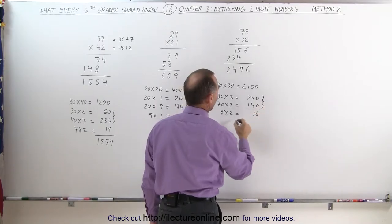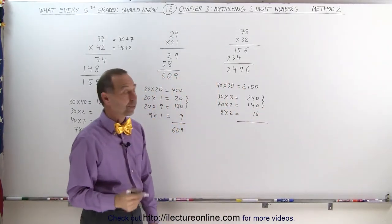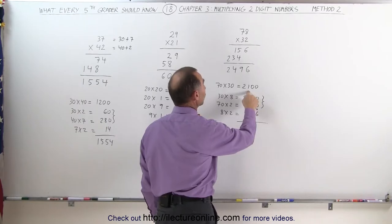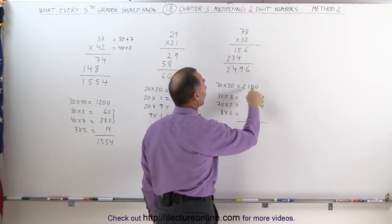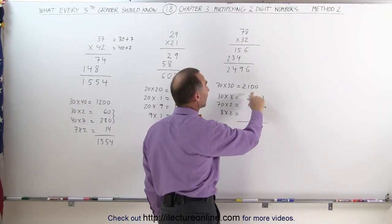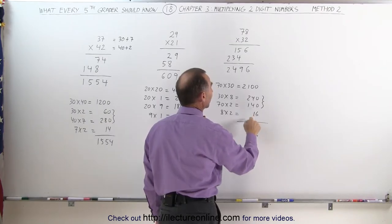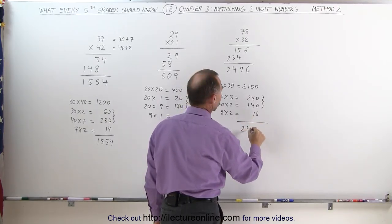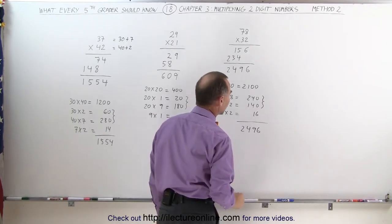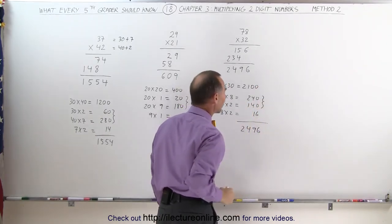The first thing I do is add those two together, 240 plus 140 is 380. Add 380 to 2100 is 2480, remember 380 plus 1, that's 480, plus 16 is 2496, or you can simply just quickly add it like that.